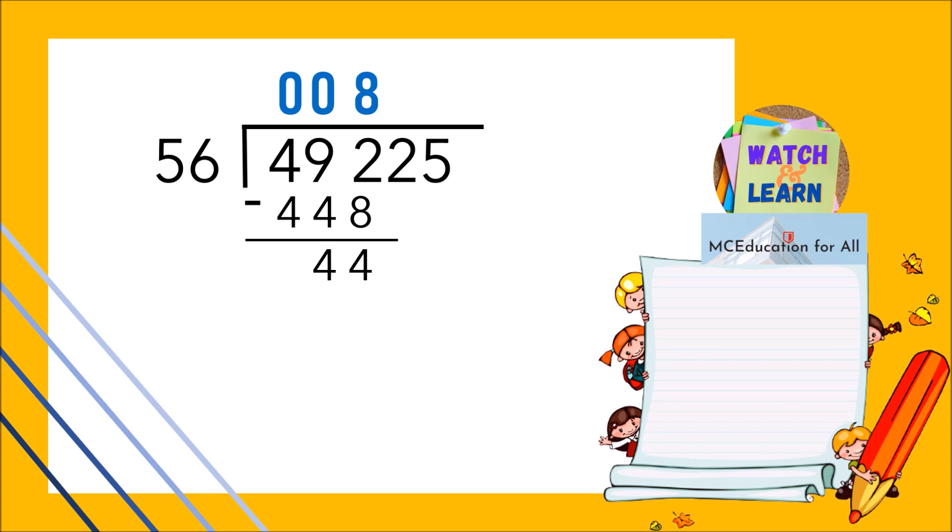Bring down 2. Again, how many times will 5 goes into 44? It's 8. Multiply. 8 times 56 is 448. Again, it's more than 442. So reduce 8 to 7. 7 times 56 is 392.